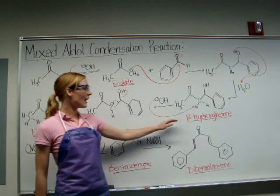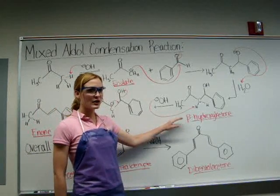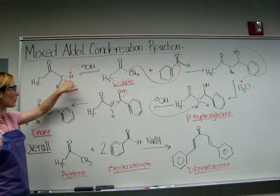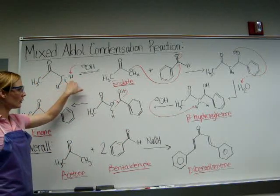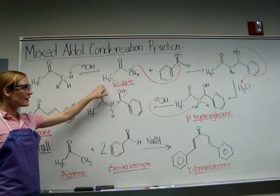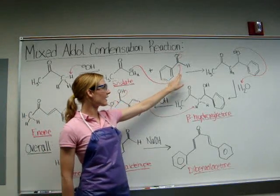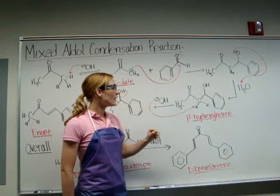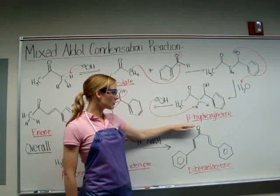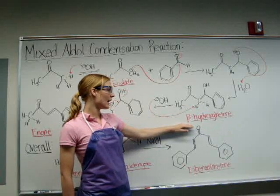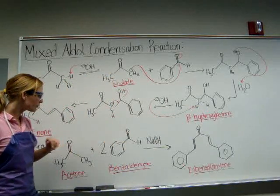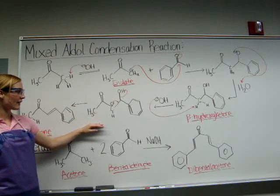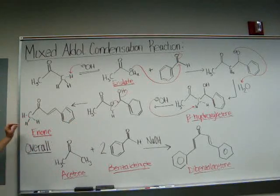The intermediate will be the beta-hydroxy ketone. First, the base will remove a proton from the acetone, which will form the enolate. This enolate will then attack the carbonyl on the benzaldehyde. Then you will have a hydration step which will form the beta-hydroxy ketone. After this, you will have a dehydration catalyzed by the base to form your enone.